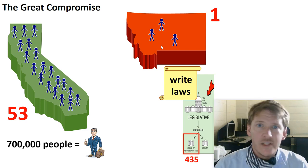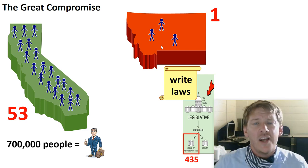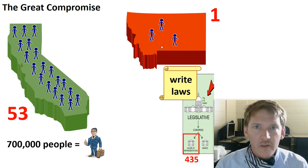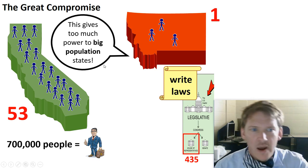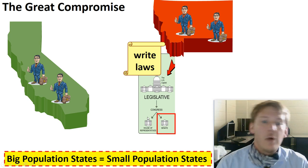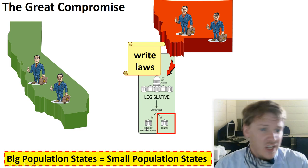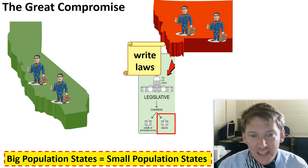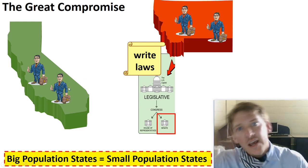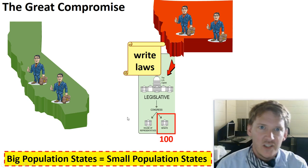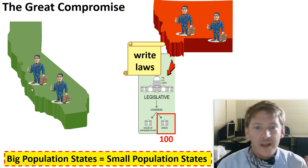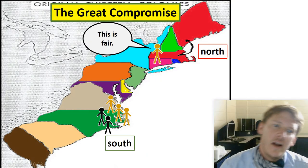So how do we convince small population states to abandon the Articles of Confederation and sign on to a government where they won't have much power? We have to give them power in return. That's where the bicameral structure comes in. In the House of Representatives, representation is based on population. But in the Senate, every state gets two senators. When you pass a law, it must pass both chambers. Big population states can dominate the House, but they still have to get that law through the Senate, where small population states have equal power. Today there are 100 senators — every state gets two. Montana has equal power to California in the Senate. That is the Great Compromise.